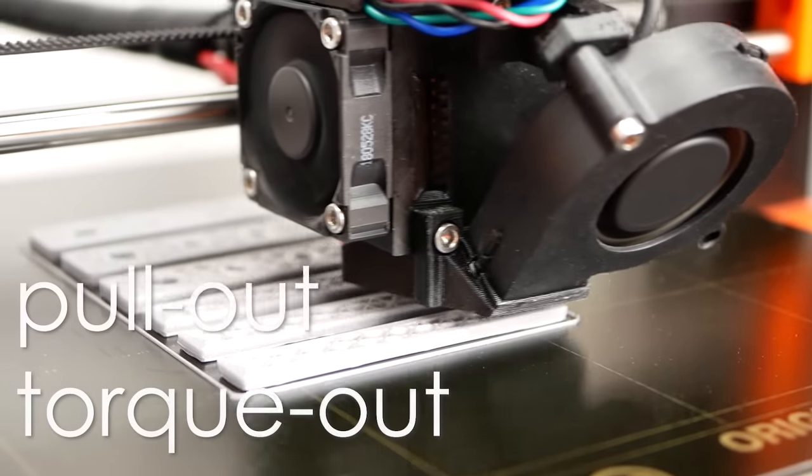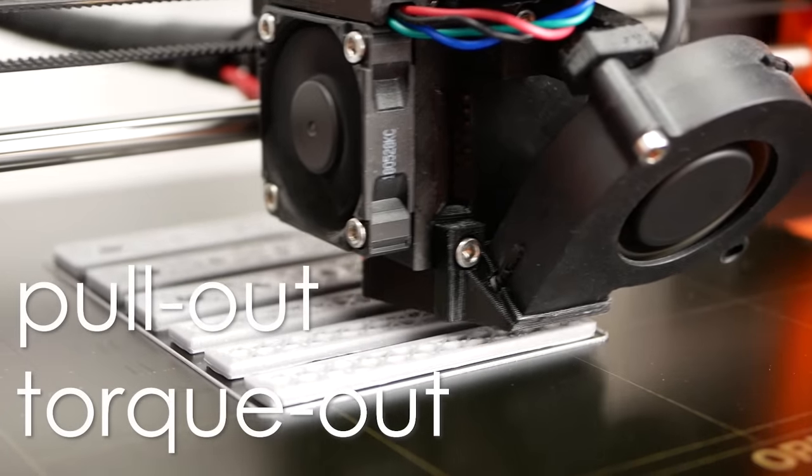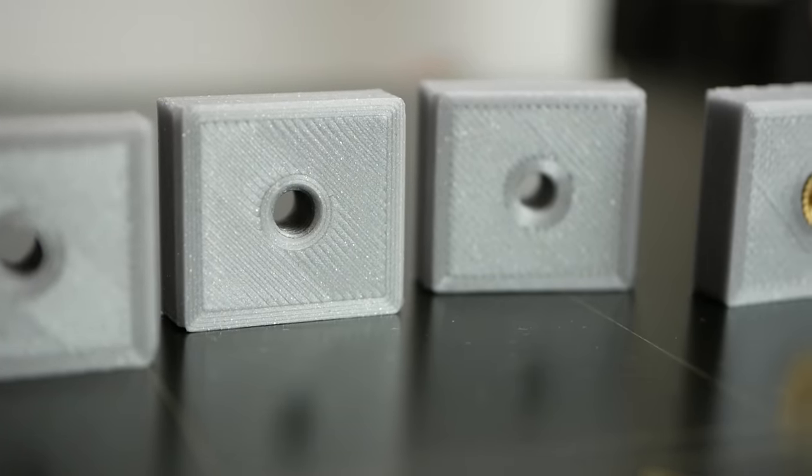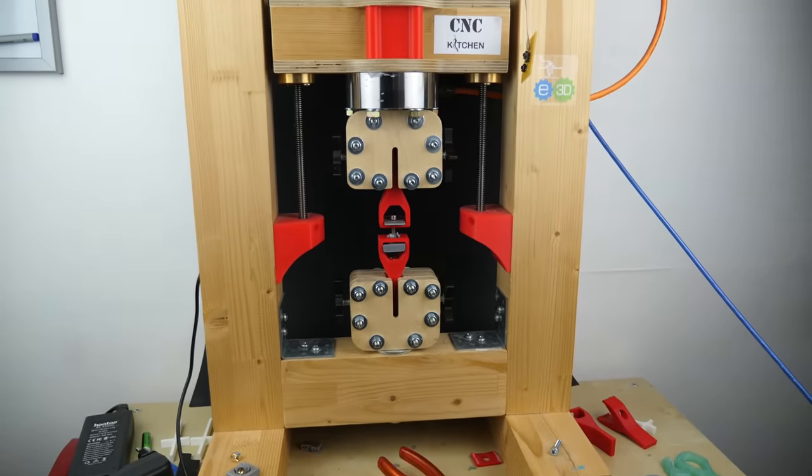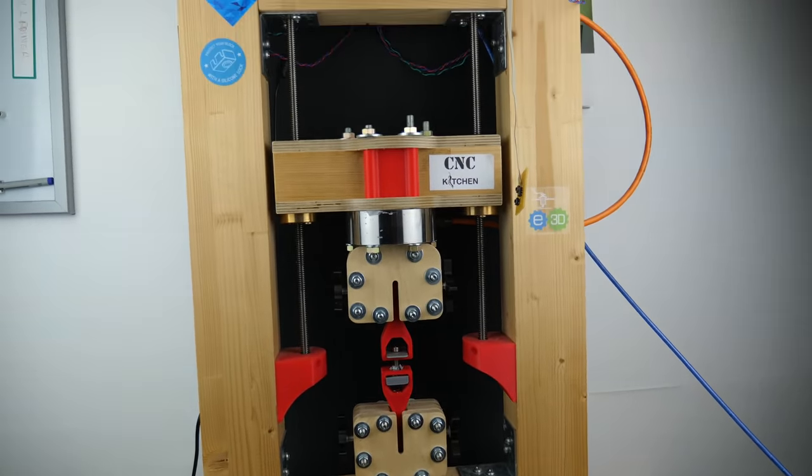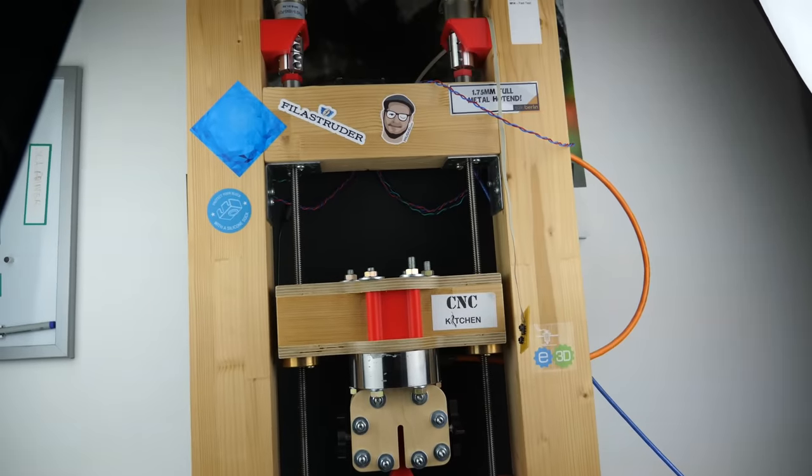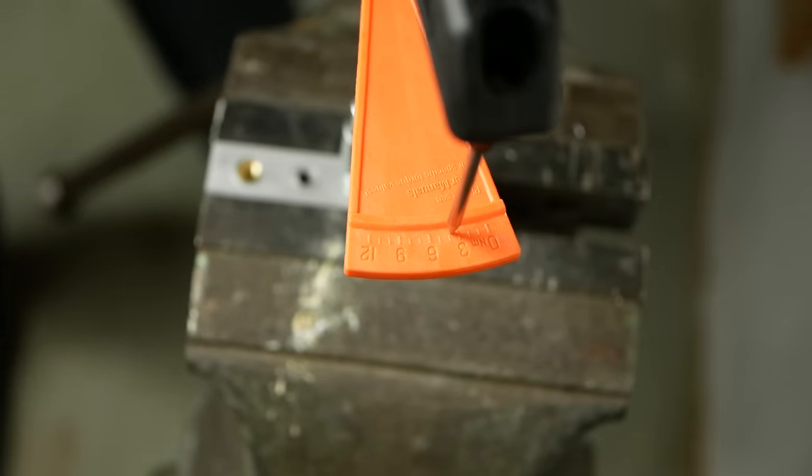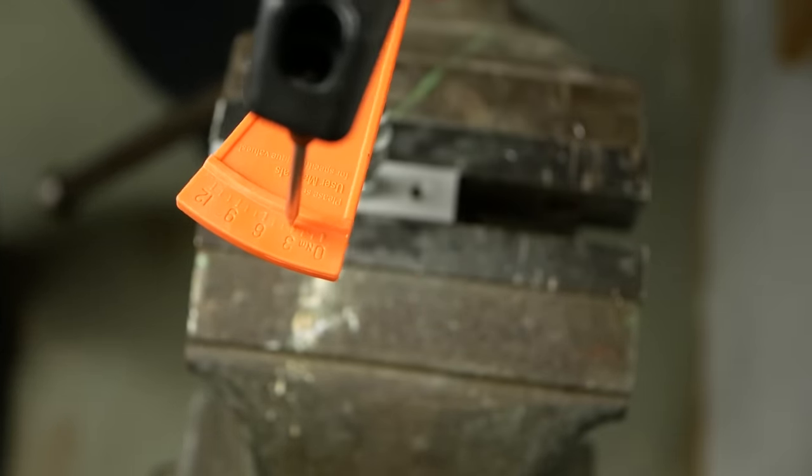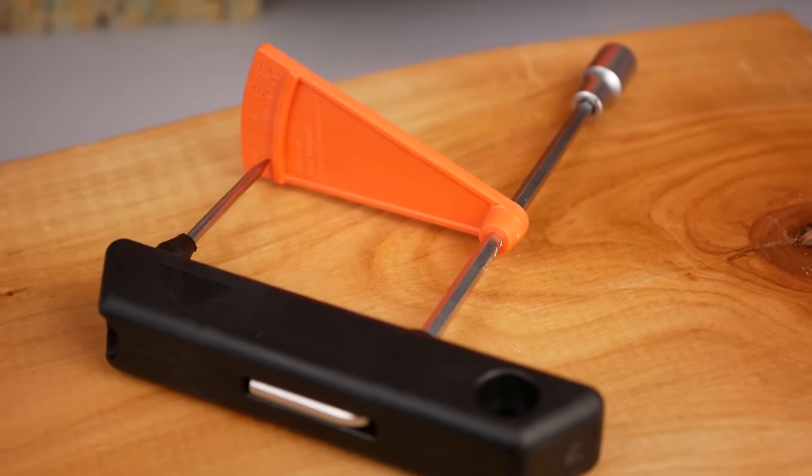I will be testing the pull-out and torque-out strength of the different threads. The pull-out tests will be performed with small test discs on my Universal Test Machine where I will see how and when the bolt is being pulled out of the threads it was screwed into. For the torque-out test I will tighten the bolt until the threads fail and measure the failure torque with the torque wrench that was delivered with my bike.